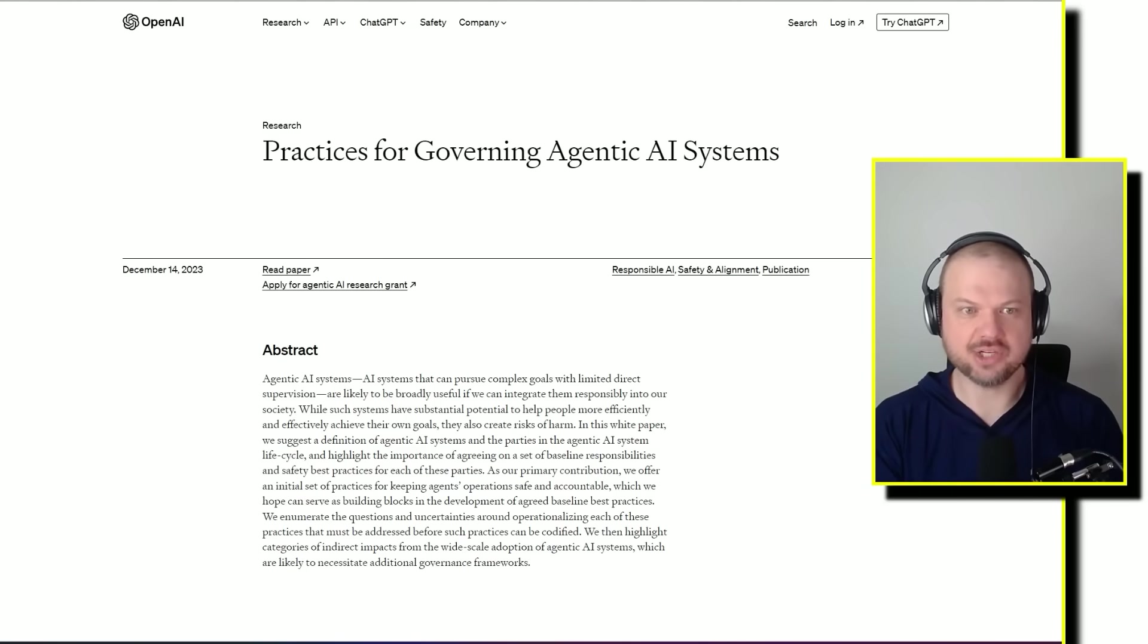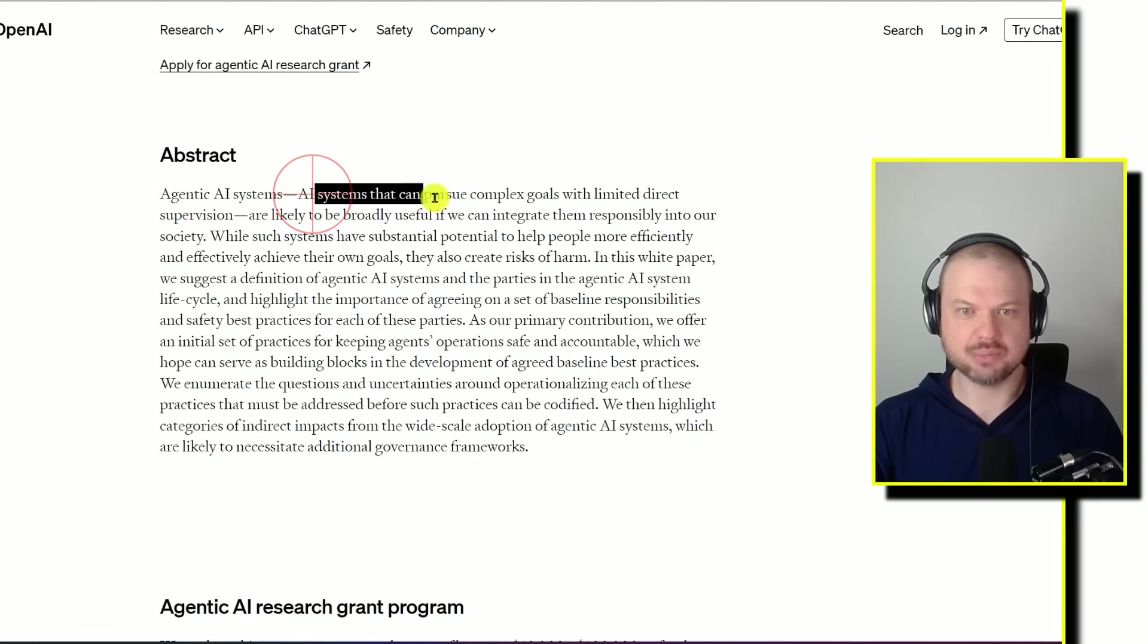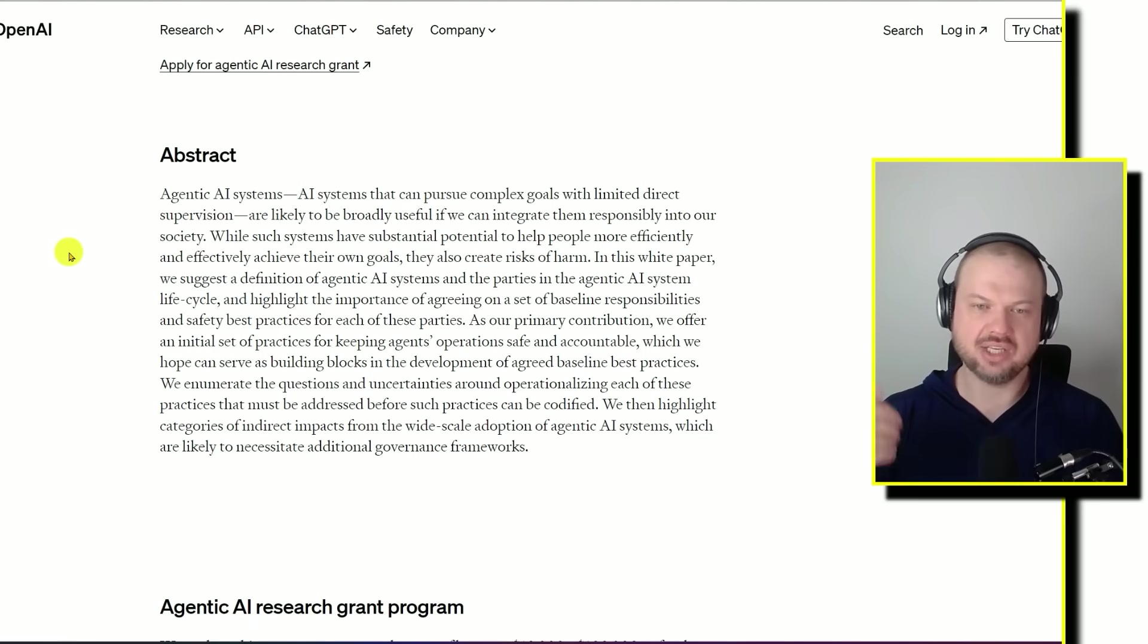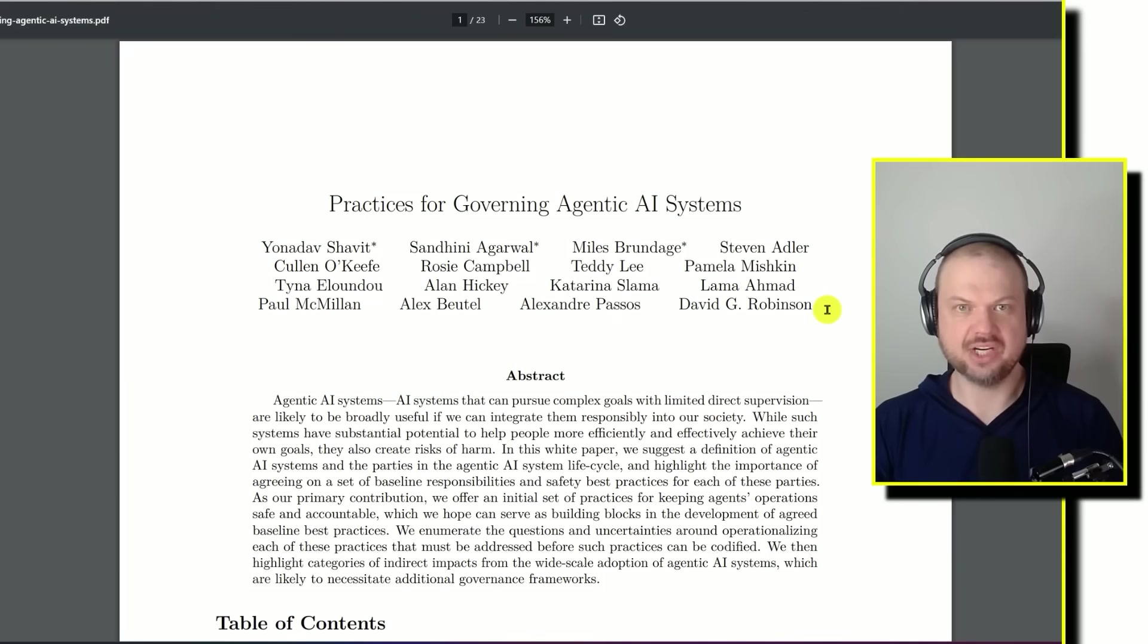And just yesterday, OpenAI drops this. Practices for governing agentic AI systems. In other words, AI systems that have agency, they have their own goals and also have the ability to pursue those goals. Agentic AI systems, AI systems that can pursue complex goals with limited direct supervision, are likely to be broadly useful if we can integrate them responsibly into our society. And here they have this paper that talks about things that we need to think about as a society, as humanity, about how to safely release these things into the wild.